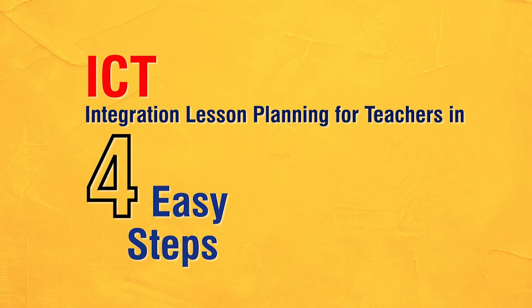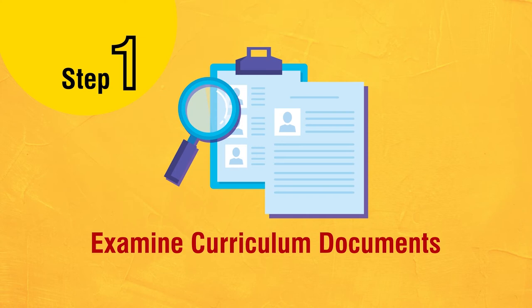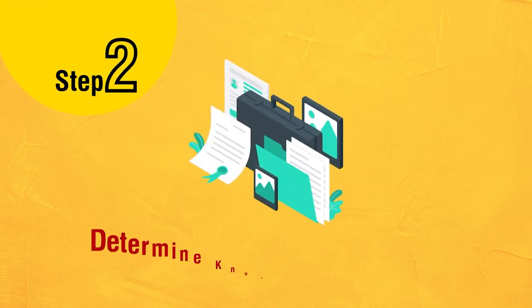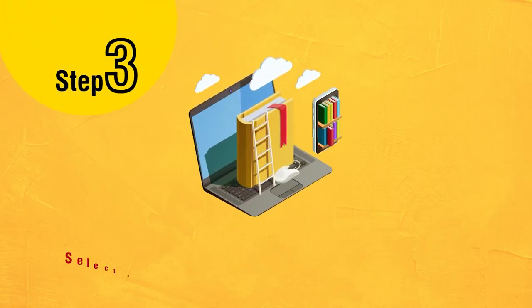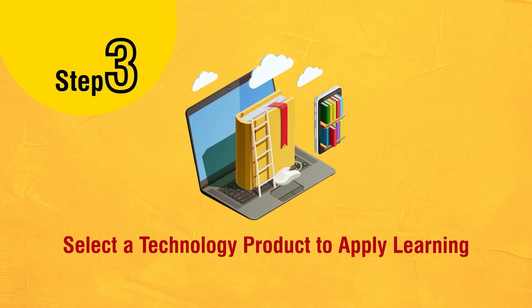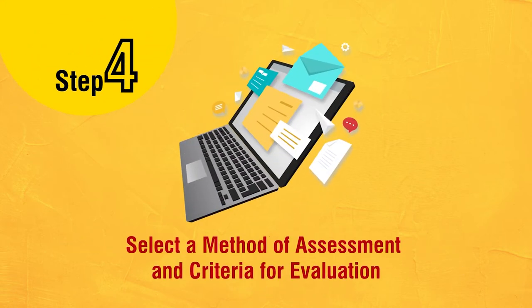There are four steps by which teachers can plan for ICT integration. Step one is to examine the curriculum documents, that is the syllabi prescribed for different courses. Step two is to determine the knowledge and skills the teacher intends to provide to learners. Step three is to select a technology to make students learn and apply learning. Step four is to select a method of assessment and criteria for evaluation of learning.